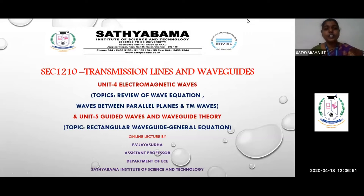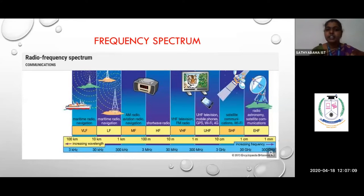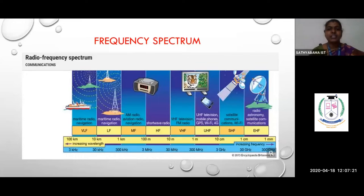We are going to mainly concentrate on unit 4, electromagnetic waves, and unit 5, waveguide theory. The first slide gives a brief introduction about the entire unit of transmission lines and waveguide. Our entire unit is based on the frequency spectrum. The first unit talks about the low frequency transmission line, covering how a distorted line can be converted into a distortion-less line, with a telephone cable as an example.